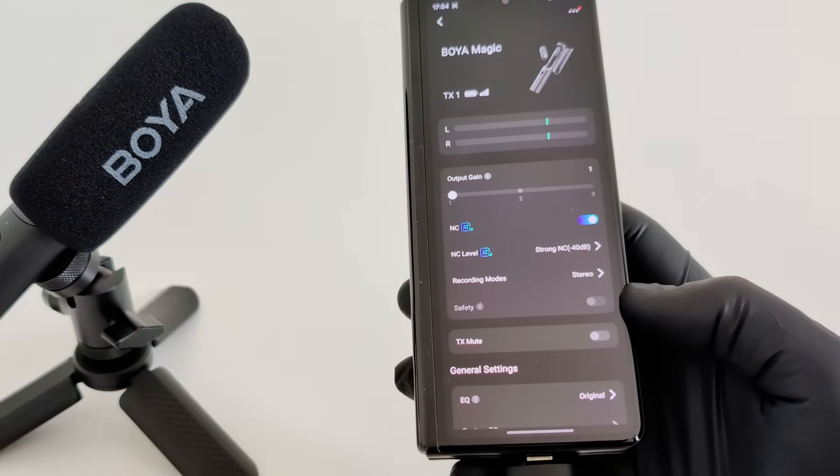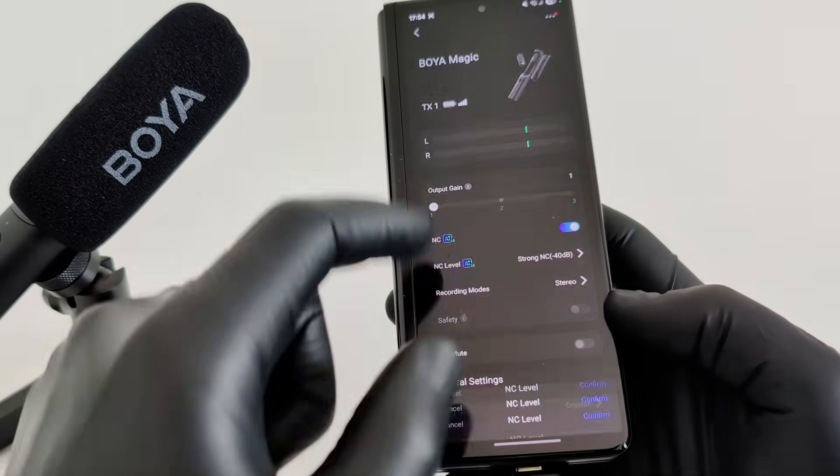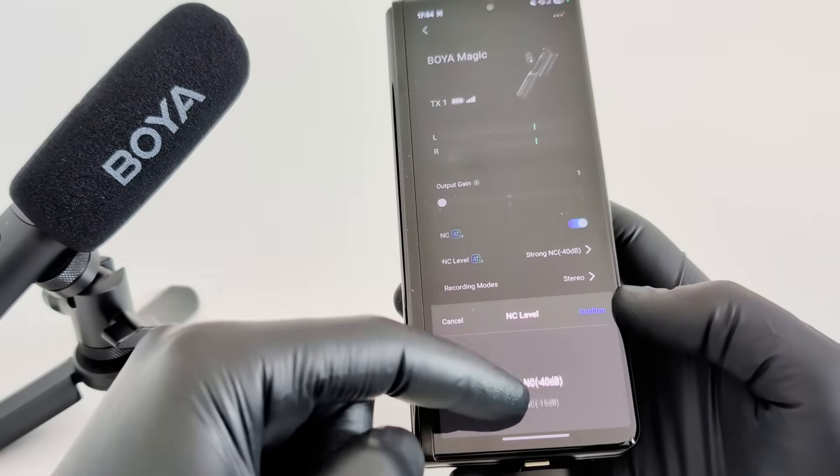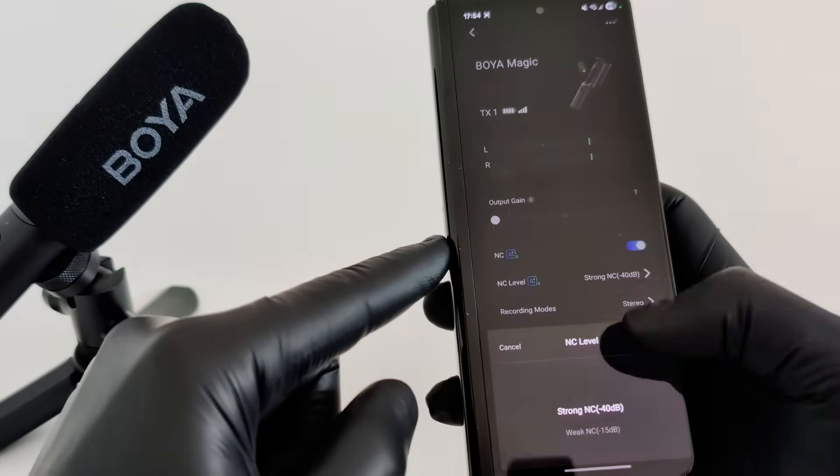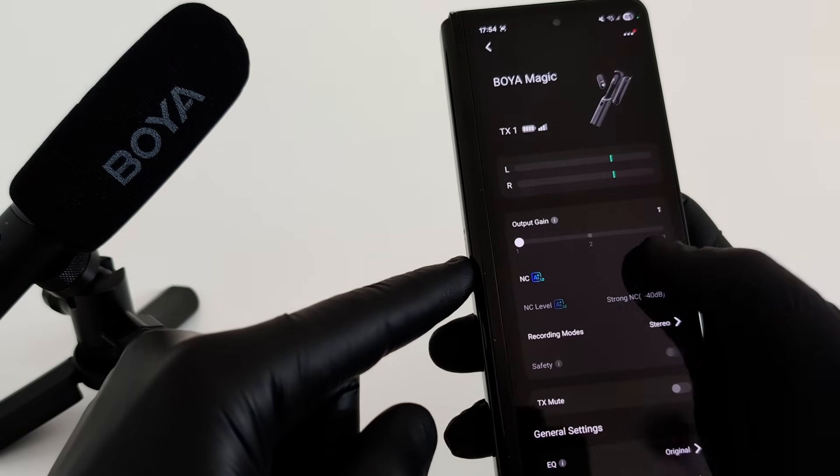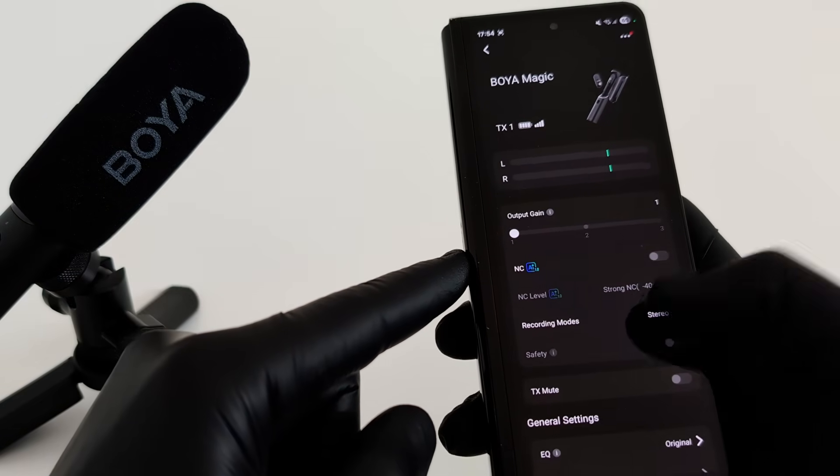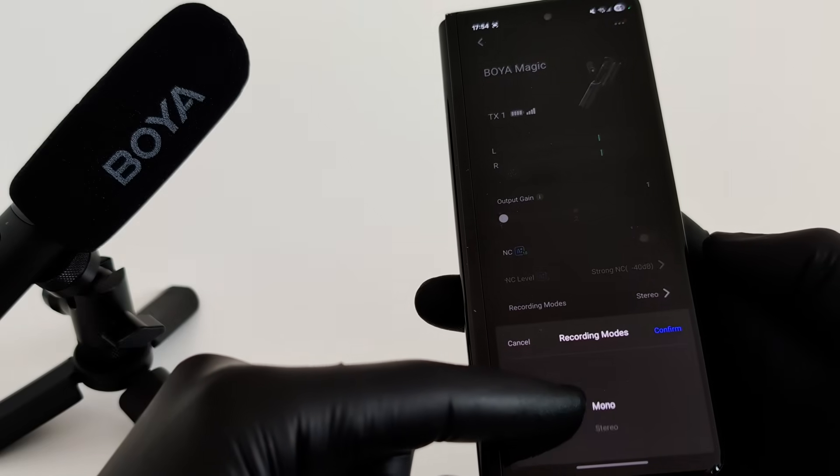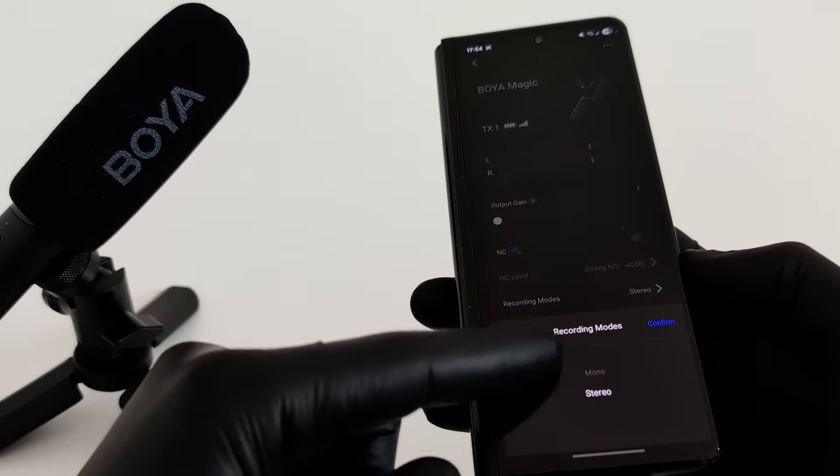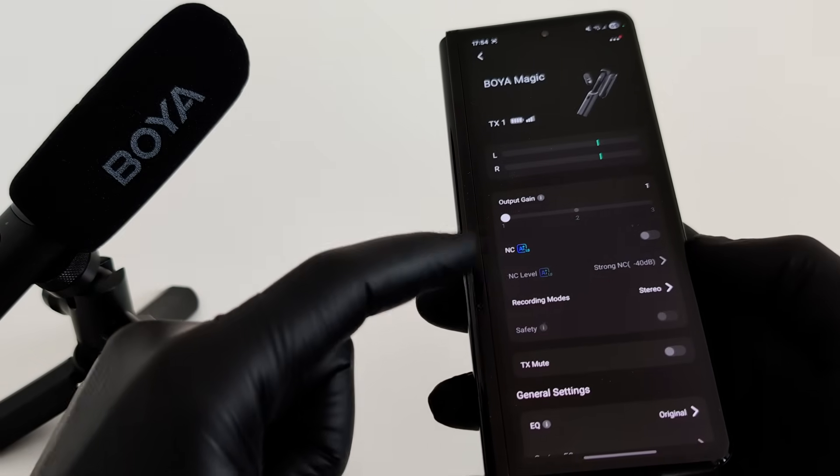Take the AI-powered noise cancellation, for instance. Right in the app, you can select its level, activate strong mode for maximum noise reduction up to negative 40 decibels in very loud places, or switch to light to gently remove faint background noise while keeping your voice sounding natural.